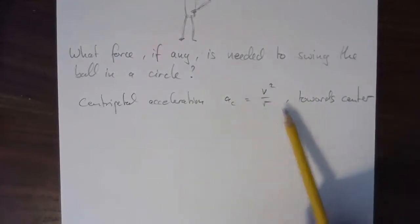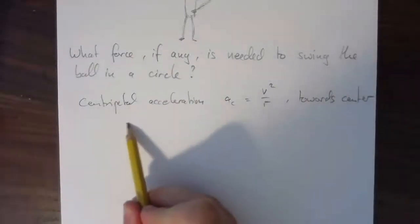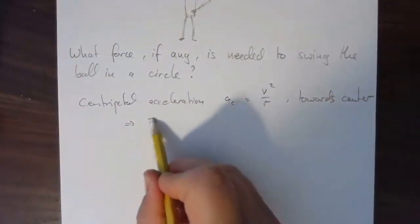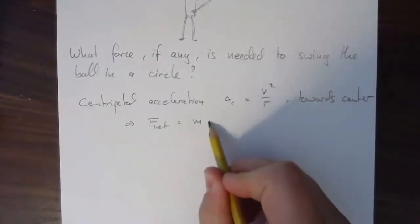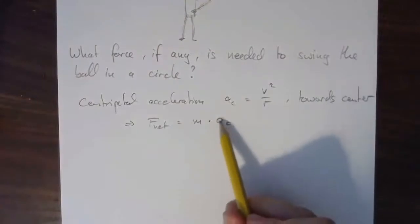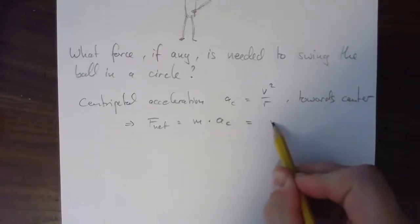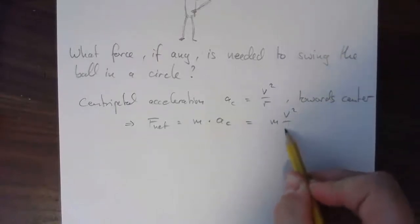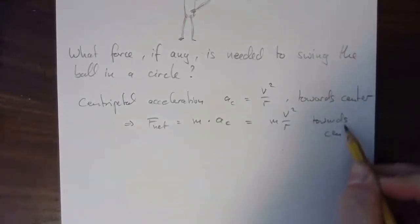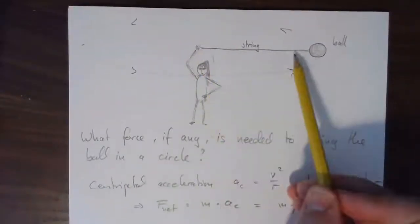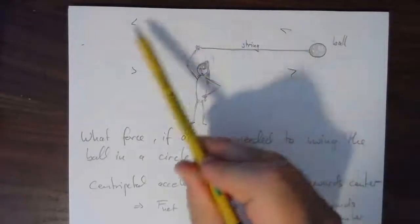We derived this from the geometry of the motion, so I won't derive it again. Because this is the acceleration, there has to be a net force. The net force equals the mass times the centripetal acceleration. Mathematically, that's M times V squared over R, directed towards the center of the circle. So there has to be a force on the ball acting towards the center of the circle.